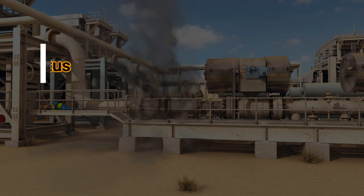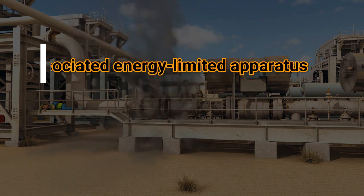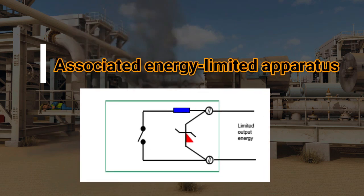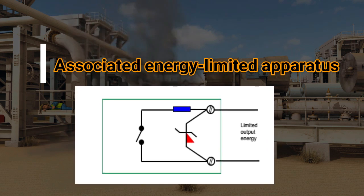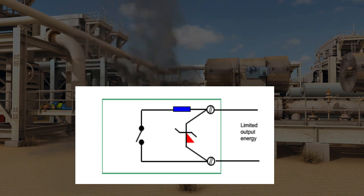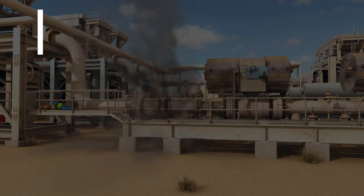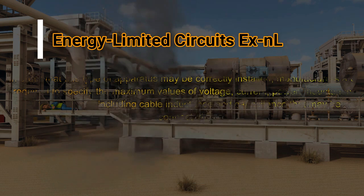Associated energy limited apparatus of this type will use zener diodes and series resistors to limit the voltage and current available to sparking contacts and energy storing components within the energy limited apparatus, or at the output terminals of the associated energy limited apparatus. Where the supply to the apparatus is mains voltage via a transformer, an upward tolerance of 10% must be assumed unless alternative measures allow dispensation of this requirement.